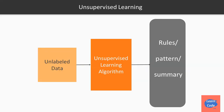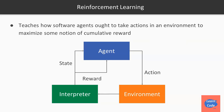In this diagram, we start with unlabeled data, pass it to the unsupervised learning algorithm, and get rules, patterns, or a summary of the data. Another popular technique is reinforcement learning, where we teach a software agent to take certain actions in an environment to maximize a cumulative reward. The agent takes an action on the environment, which is interpreted by an interpreter that sends a reward if the action was correct and also changes the state of the agent.